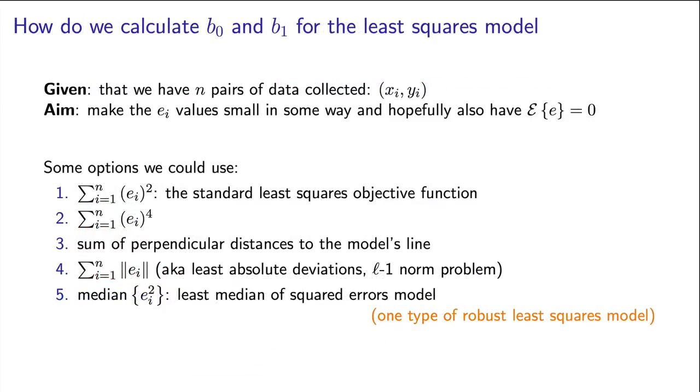We learnt in the last video that there are a number of ways in which we can calculate the intercept and the slope for the regression model. Given this large number of options, one should ask, why is least squares still the most popular way to fit these models?